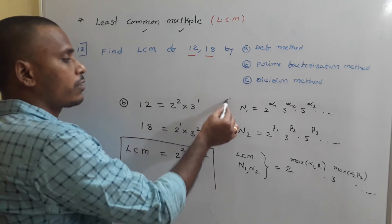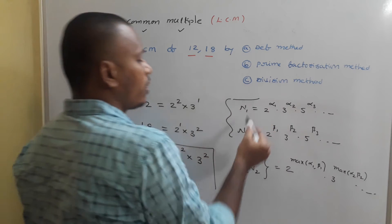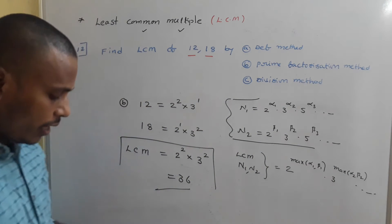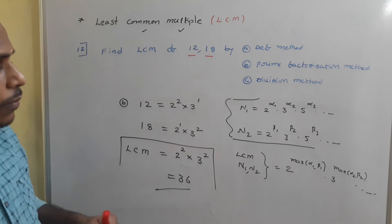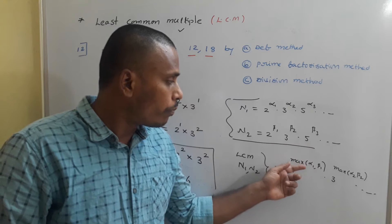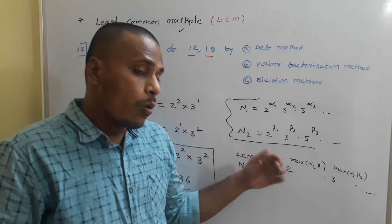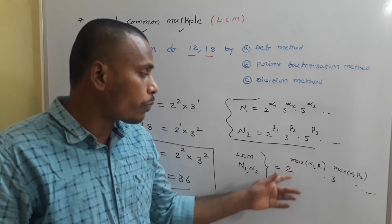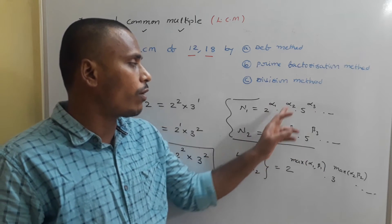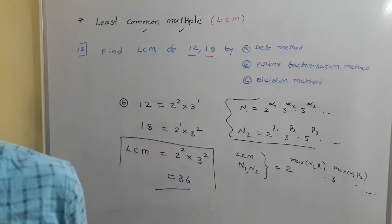You need to memorize this: if you have two numbers with their prime factorizations, then HCF is the product of prime numbers with powers as the minimum of α and β, whereas LCM is the product of prime numbers with powers as the maximum of α and β.